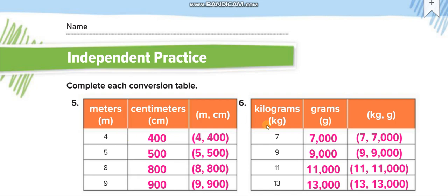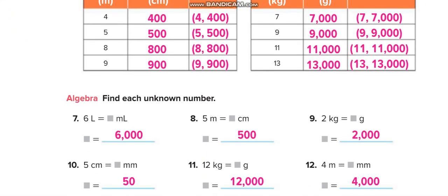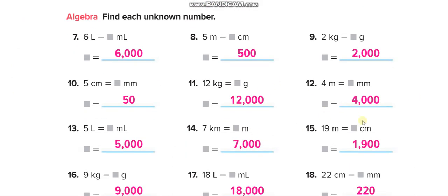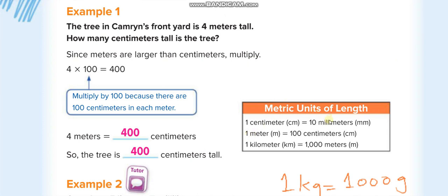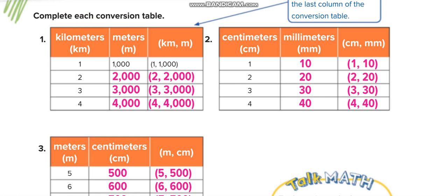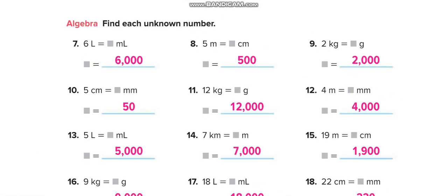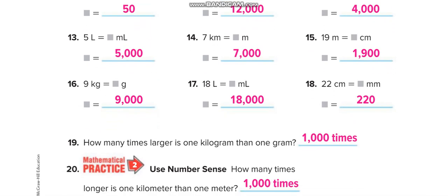In independent practice, convert the tables: from meters to centimeters multiply by one hundred; from kilograms to grams multiply by one thousand. For meters to millimeters, the table doesn't show a direct conversion, so first convert meters to centimeters, then centimeters to millimeters. For example, four meters: one meter is one hundred centimeters, so four meters equals four hundred centimeters. Then one centimeter is ten millimeters, so four hundred centimeters times ten equals four thousand millimeters.